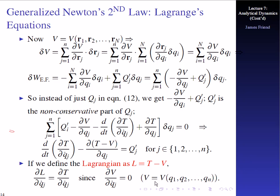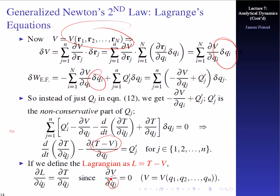So if we define the Lagrangian as L equals T minus V, then the partial of L with respect to q dot sub j is equal to the derivative of T with respect to q dot sub j, because the derivative of the potential energy V with respect to q dot sub j is equal to zero — notice it's only a function of position, it's not a function of velocity at all or generalized coordinates or anything else. So this will automatically fall out, and we can just replace this with L, meaning T minus V, because the partial of V with respect to q dot sub j is always going to be equal to zero.